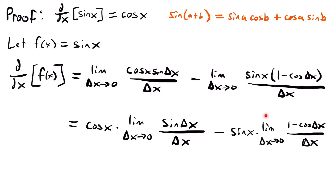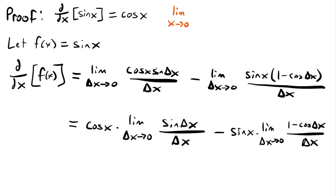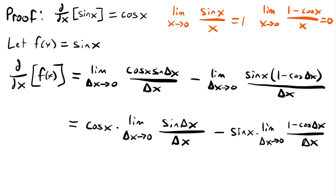These are two special trigonometric limits. The limit as x approaches 0 of sine x divided by x equals 1, and the limit as x approaches 0 of 1 minus cosine x divided by x equals 0. Even though our variable is delta x instead of x, the limits are identical — just with a different variable name. So our first limit equals 1 and our second limit equals 0.